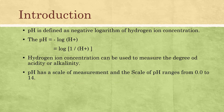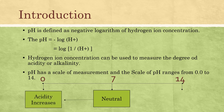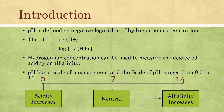pH has a scale of measurement that ranges from 0.0 to 14. Imagine a scale that starts from 0 and ends at 14. At the center is the value 7, which is called the neutral pH value. When we go below 7 towards 0, acidity increases and these values are called acidic values. When we go above 7 towards 14, the pH increases to alkalinity and these values are called alkaline values.